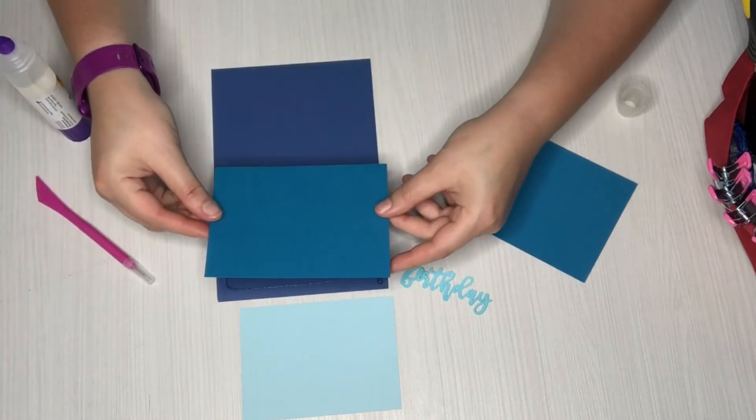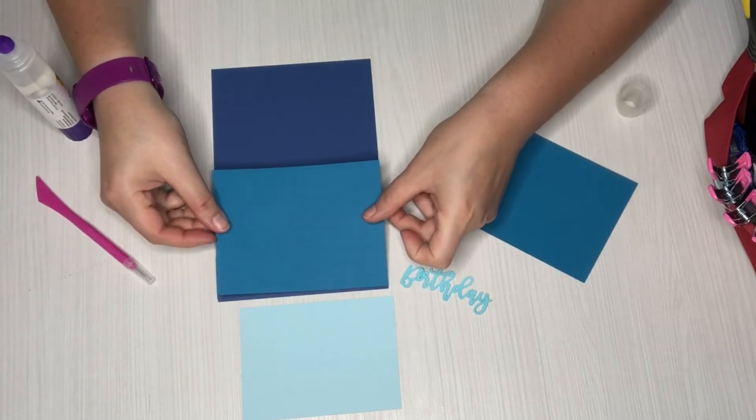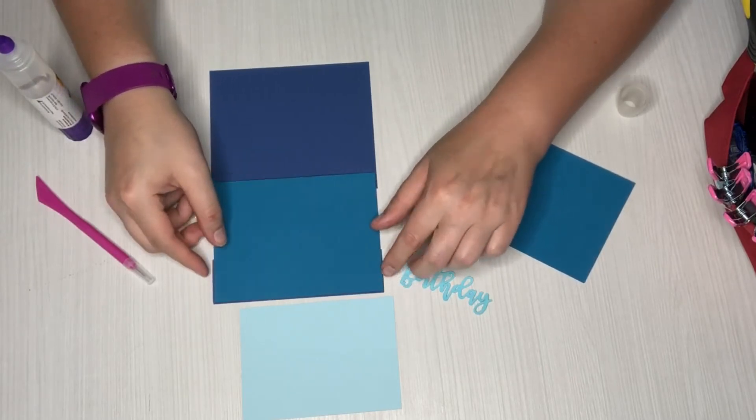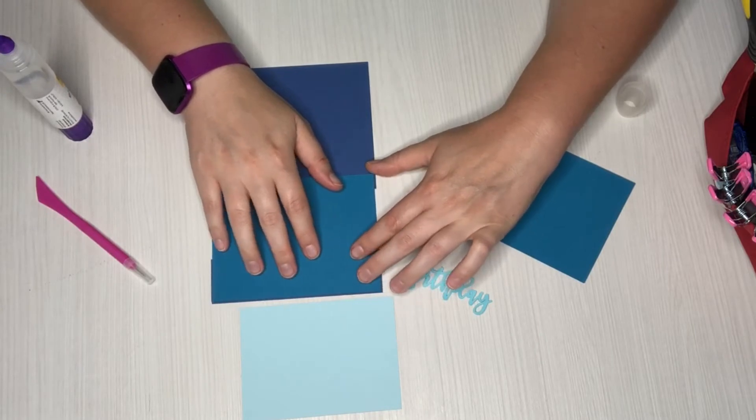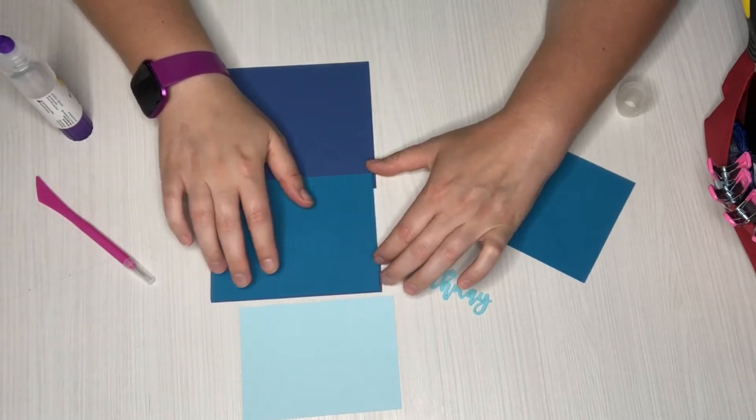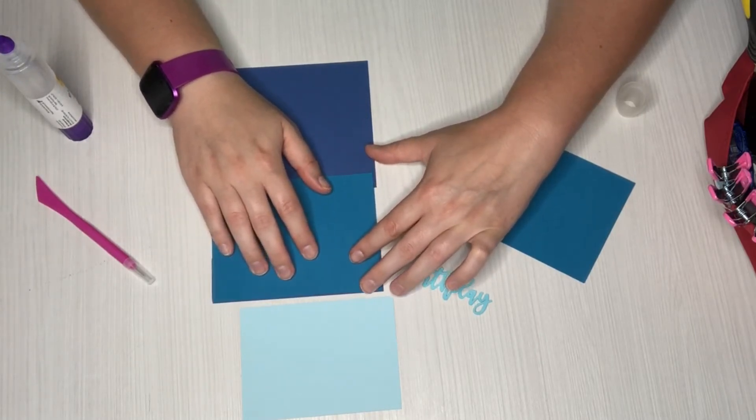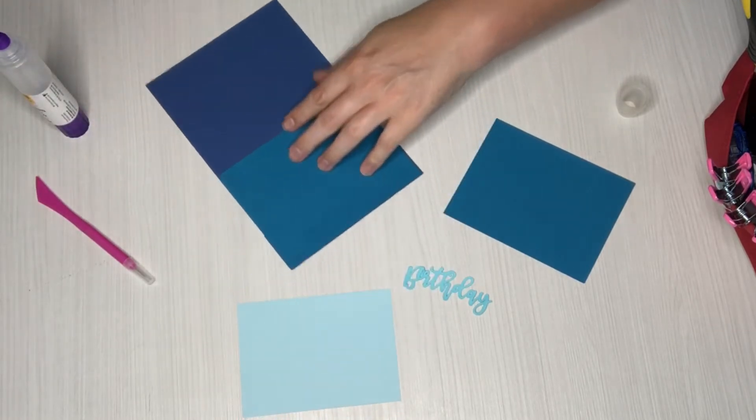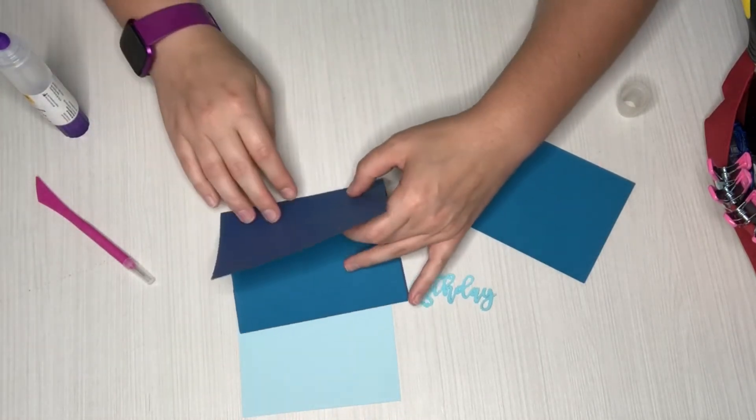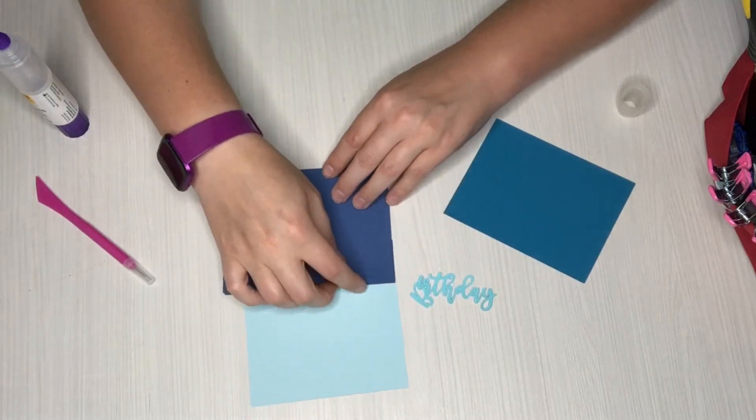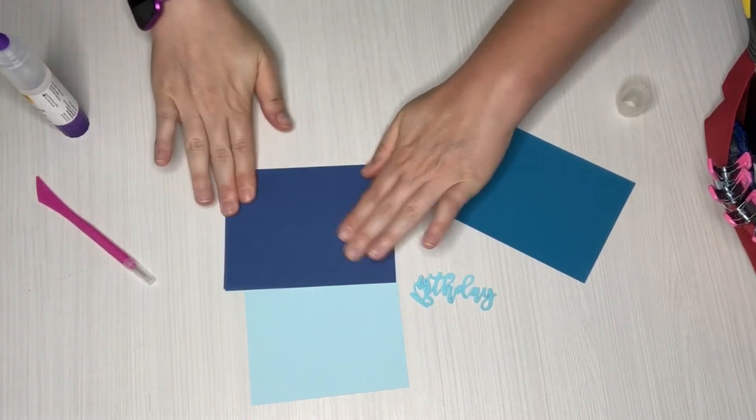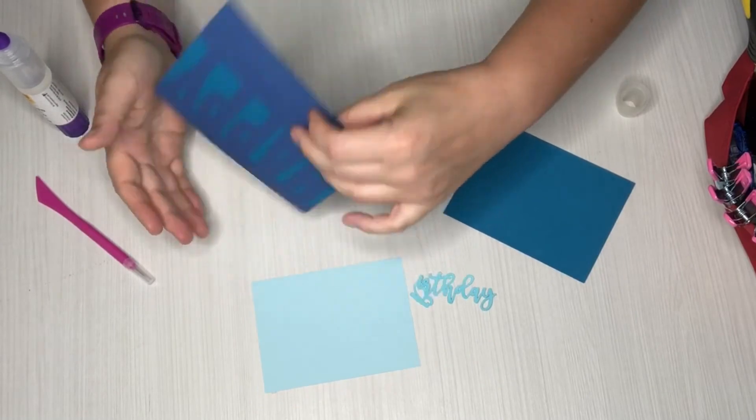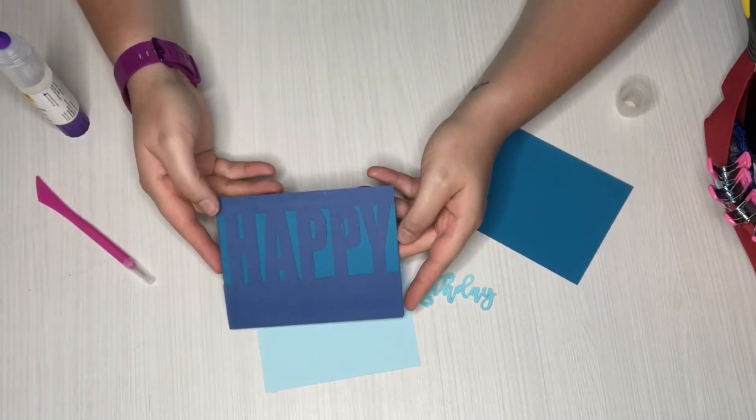So now I'm gonna take this and I'm gonna line it up with the bottom of that base card and then I'm just gonna center it side to side. And then once you've got that you can go ahead and close up the card and give that a nice press. So then that's what it looks like from the front.